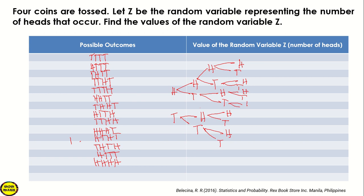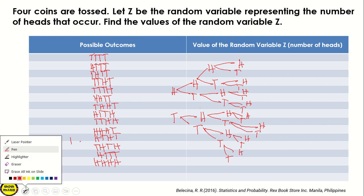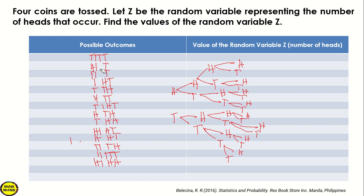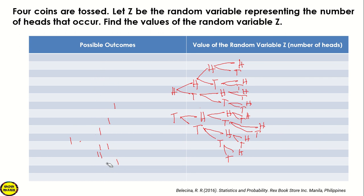On the tail branch, we also have head and tail, then another head and tail, and so on completing the tree. Let me erase our earlier work, class, so we don't get confused. Again, you can use a tree diagram to get all the possible outcomes.